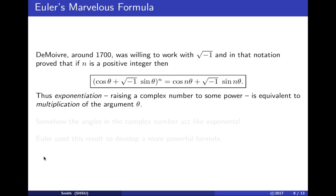Thus exponentiation is equivalent to multiplying angles by n. The angles in complex numbers act like exponents, and this is what Euler discovered.